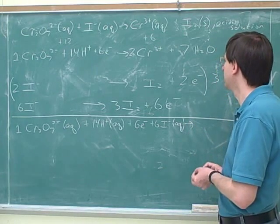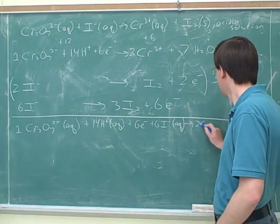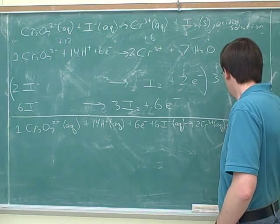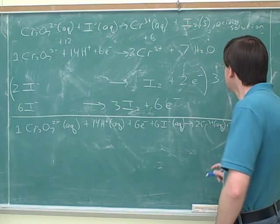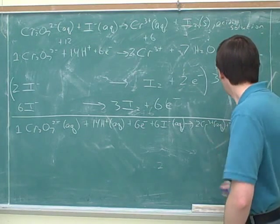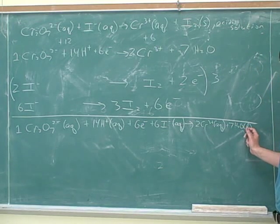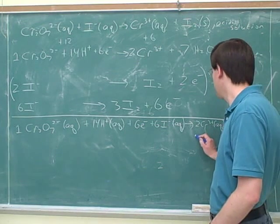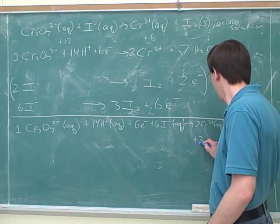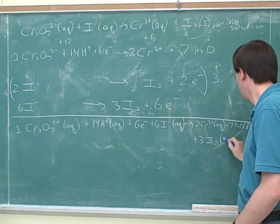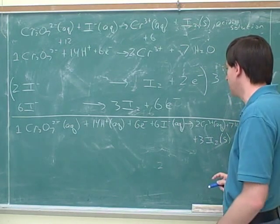All right. And then how about on the product side? 2 Cr3+ aqueous. 7 H2O liquid. Plus 3 I2 plus 6 electrons. Good. By the way, notice that the H2O would be a pure liquid. And then we would have the I2, which is solid. That seems to be precipitating out.